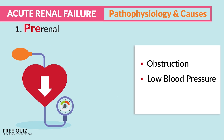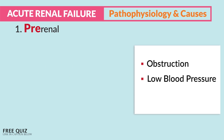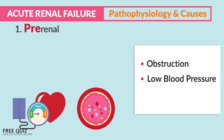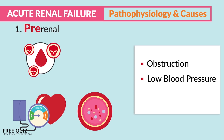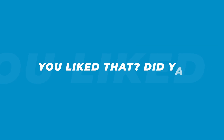Another cause of pre-renal is low blood pressure — that low perfusion — seen in patients with shock or hypovolemia from major blood or volume loss resulting in dehydration, which decreases MAP, that mean arterial pressure.